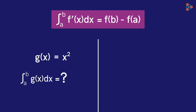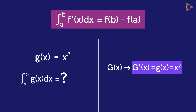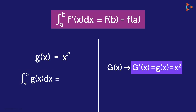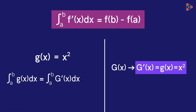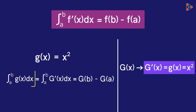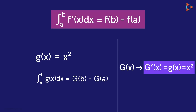Suppose we find a function capital G of x such that its derivative is this function g of x. Then we will get the integral of g of x is equal to the integral of the derivative of capital G of x. Now according to this result, we can see that this integral will be equal to this. So the integral of the function g of x is equal to the difference between the values of the function capital G of x.